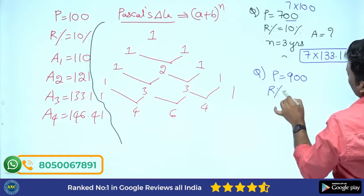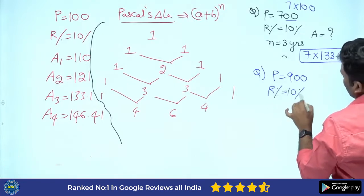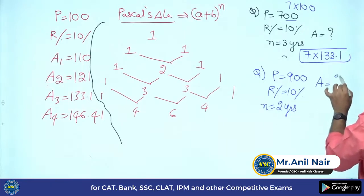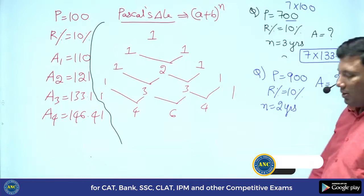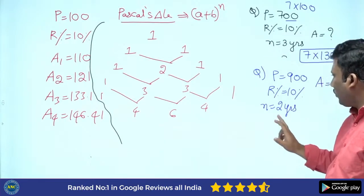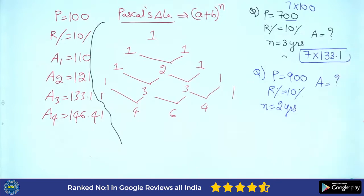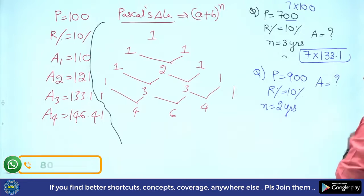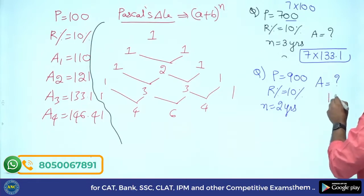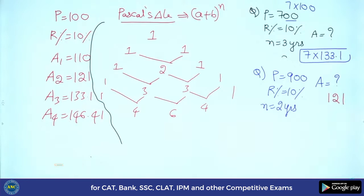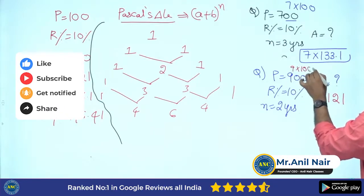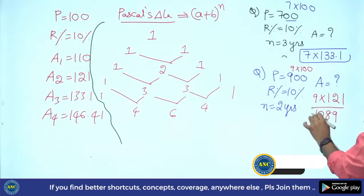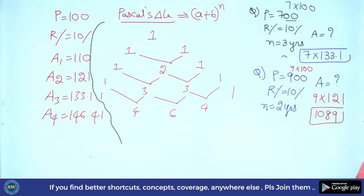Suppose the question is: P is 900, R is 10 percentage, N is 2 years. Amount is how much? If it is 100, for 2 years write down the coefficients of (a + b) whole square: a squared + 2ab + b squared, giving 121. Since 900 is 9 times 100, the amount is also 9 times 121, which is 1089.